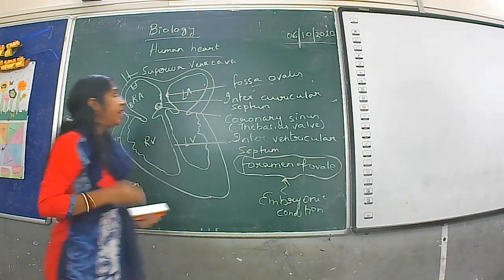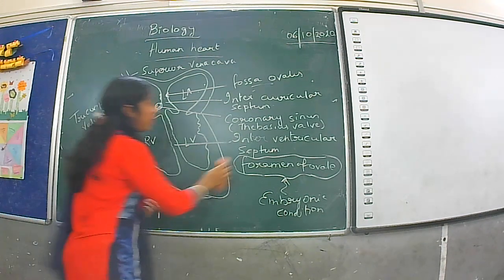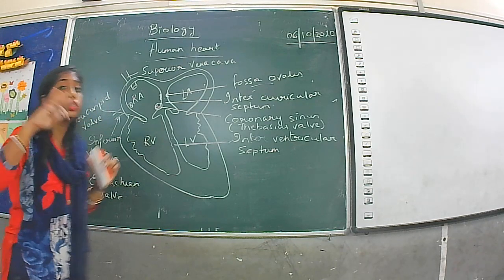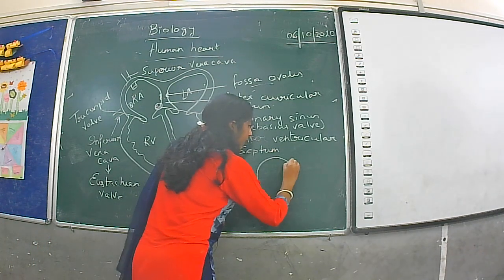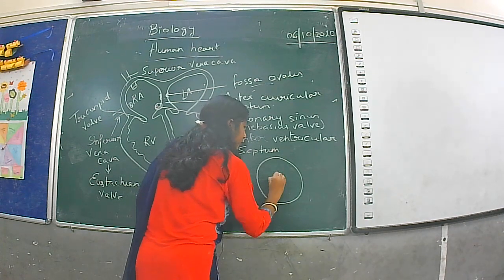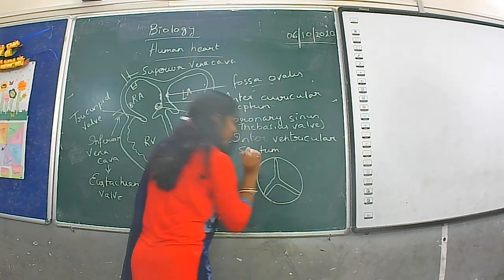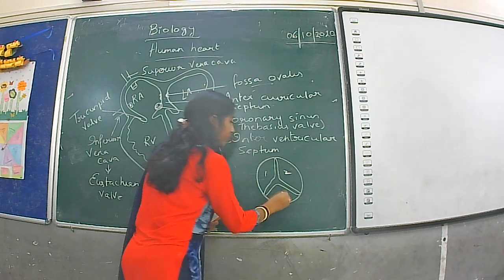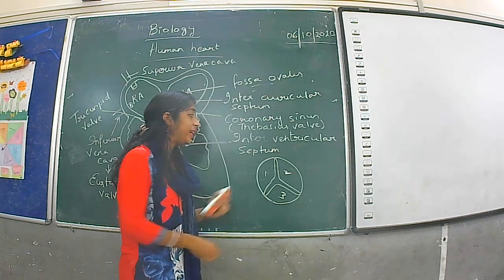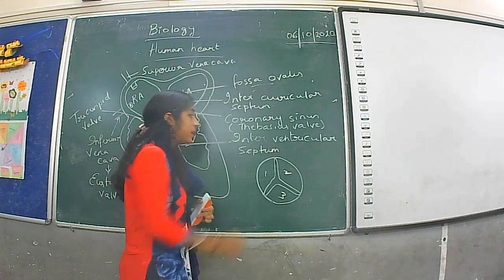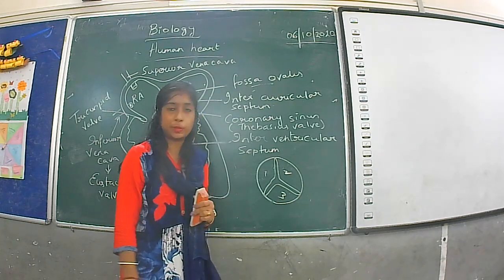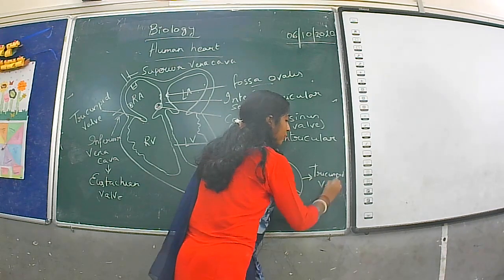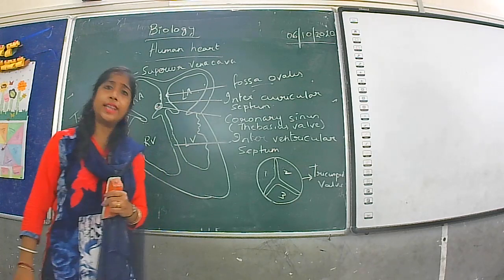Why is it called the tricuspid valve? If you look at the valve from the top, you will see three cusps or three semicircular structures. Since there are three cusps present, it is known as the tricuspid valve. This tricuspid valve is present at the right auriculo-ventricular junction.